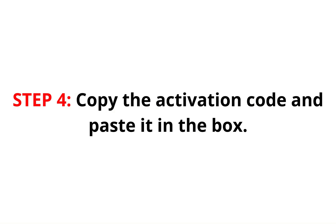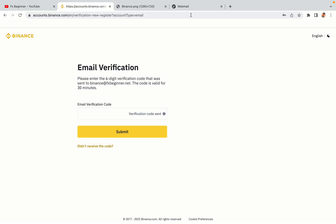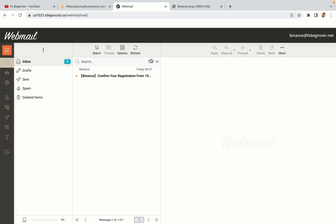Step 4: A confirmation code will be sent to your mail. Open your mail inbox, copy the code and paste it in the box to fully activate your Binance trading account.